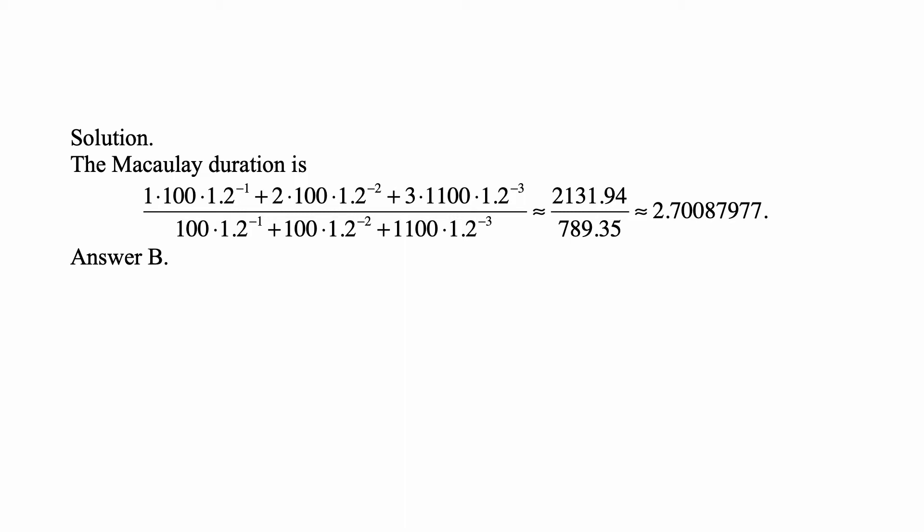This is approximately 2,131.94 over 789.35. Because there are only three payments, there's not much calculation in this. The ratio is approximately 2.70087977, which is answer B.